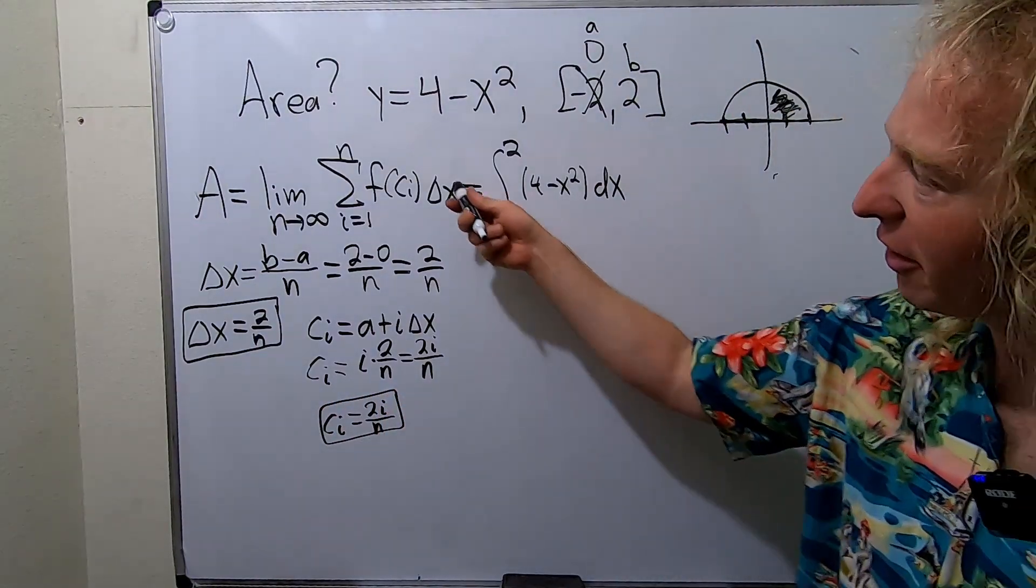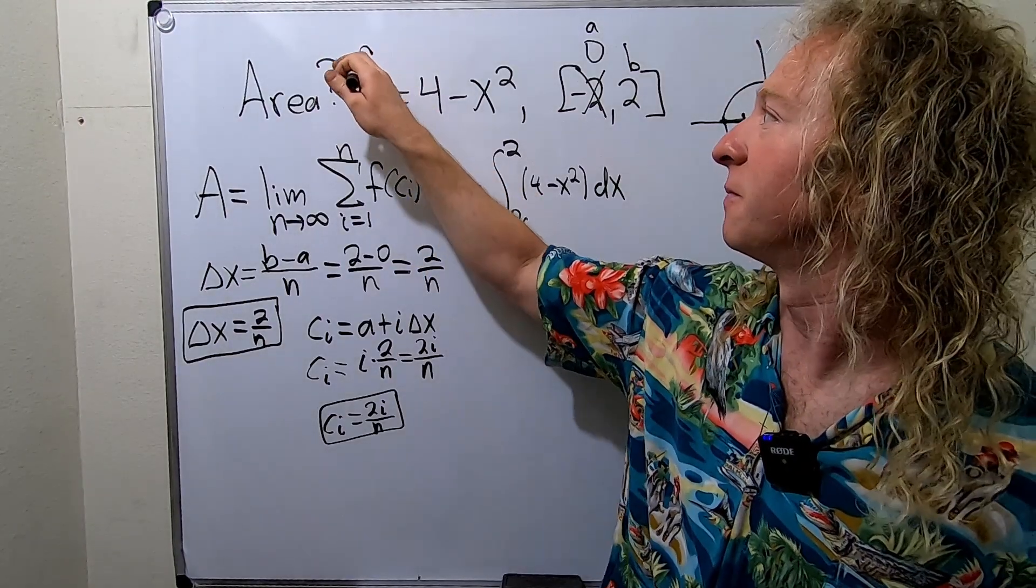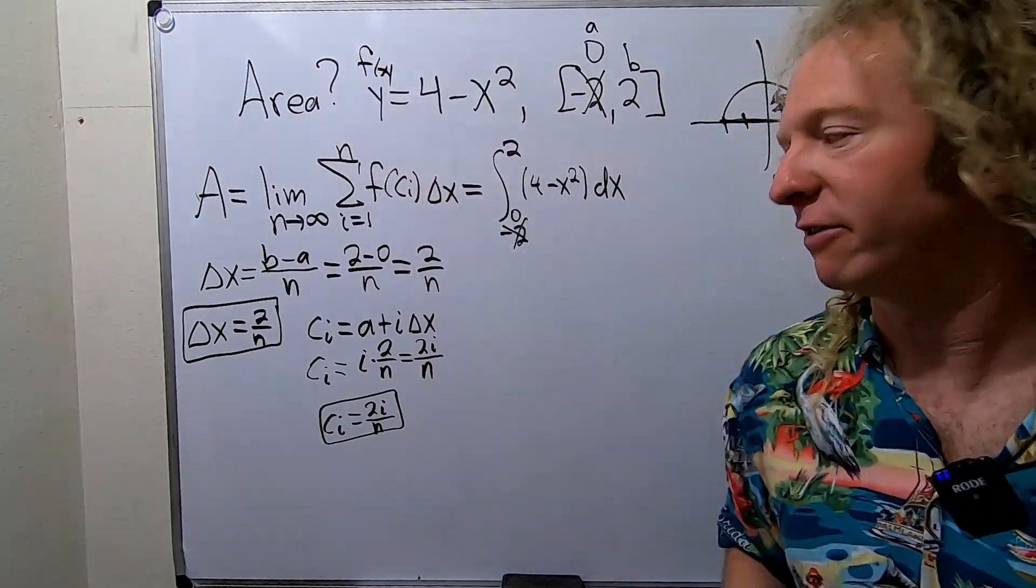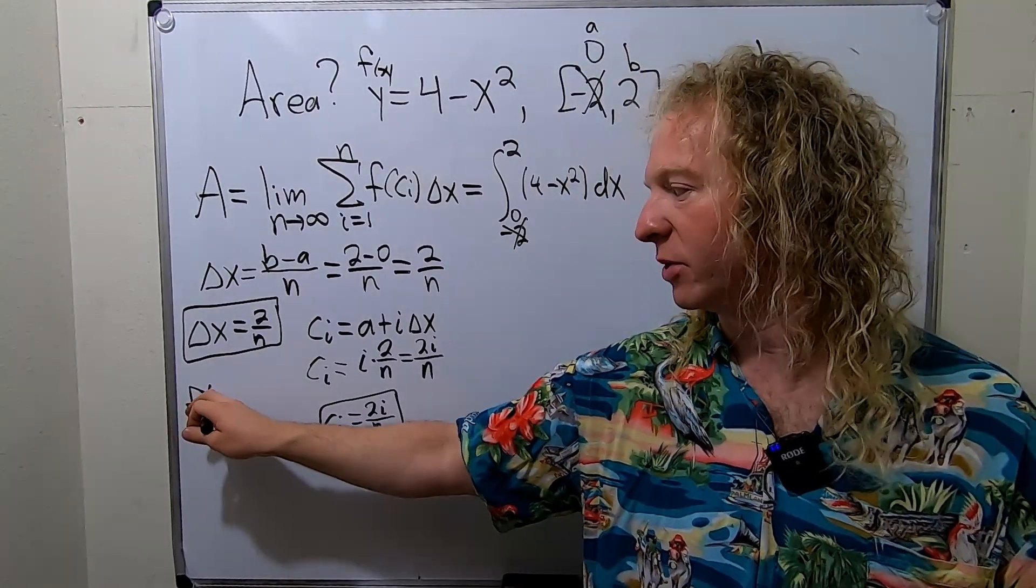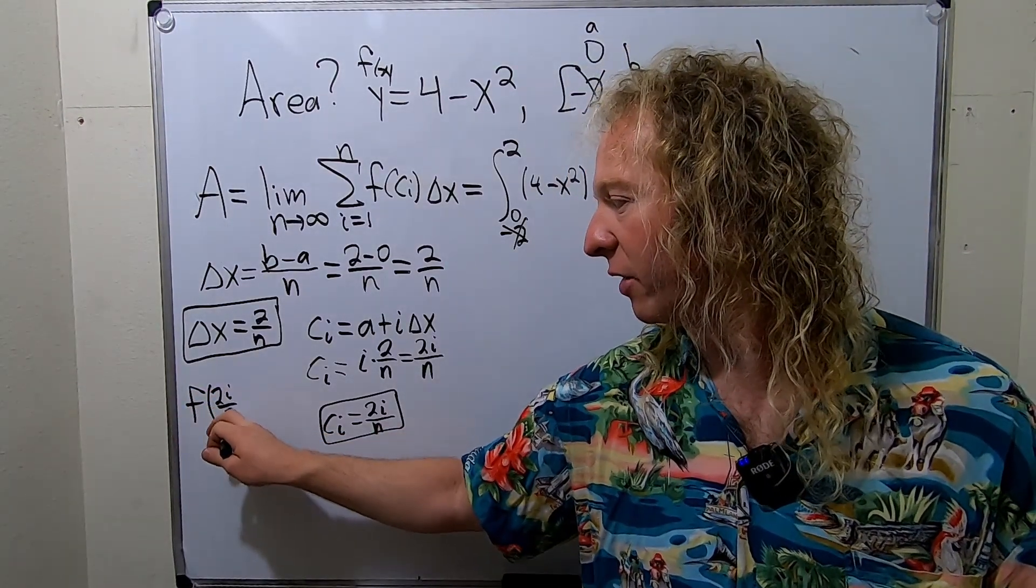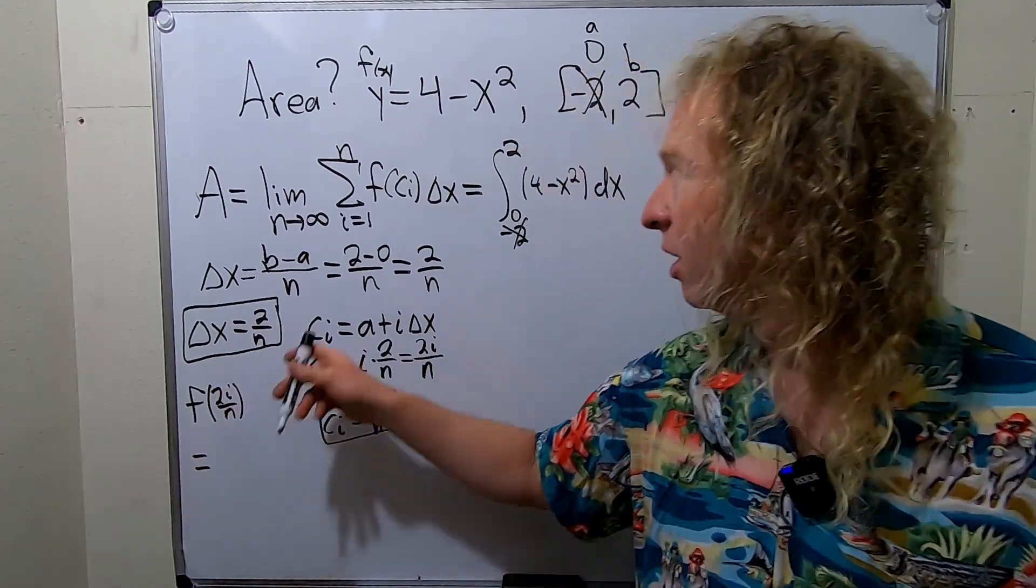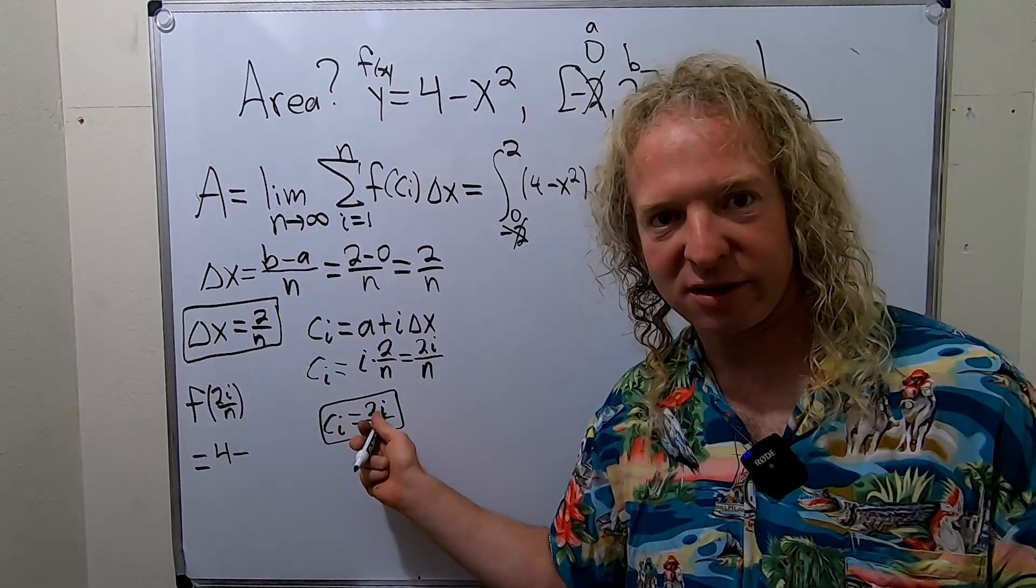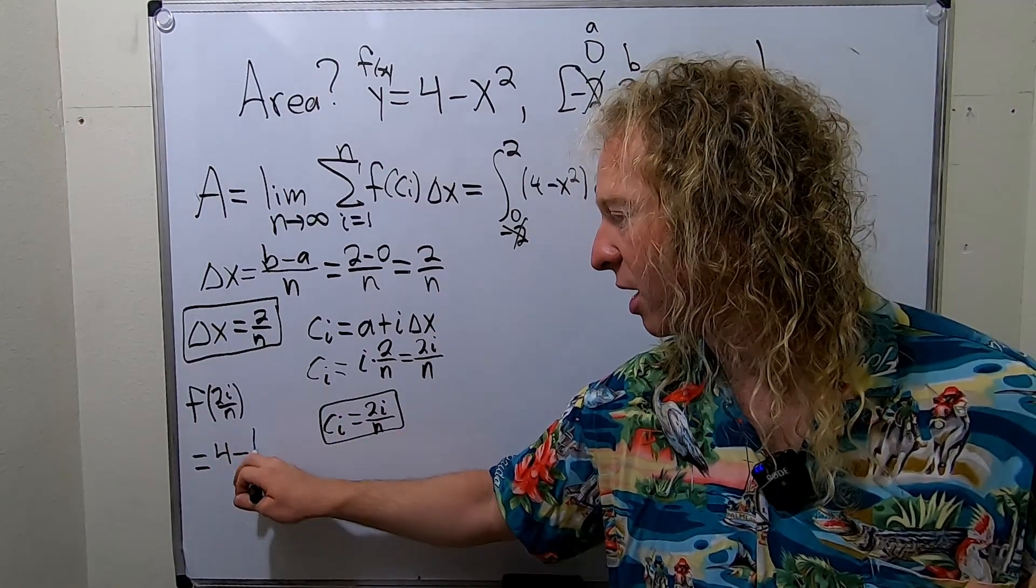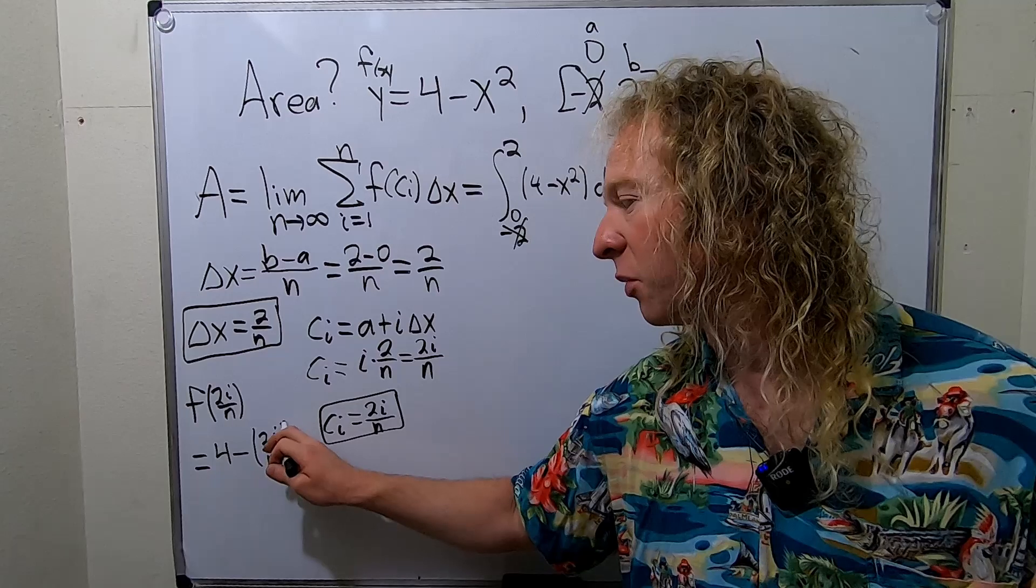So now we've got to work out f of c sub i. So by the way, this is our f of x. y is equal to f of x. So f of c sub i is f of 2i over n. So we have 2i over n. So that's equal to, well, it'll just be 4 minus x squared. So 4 minus this thing here squared. So 2i over n squared.